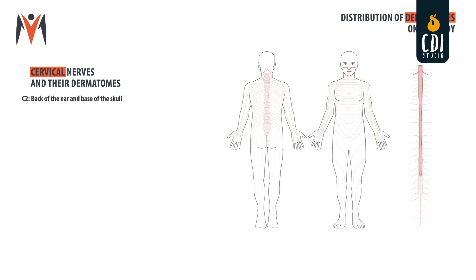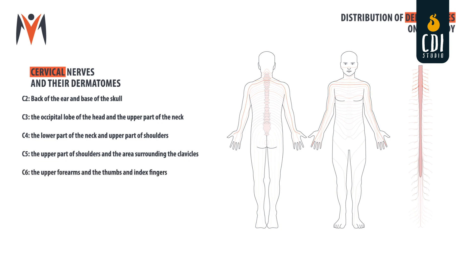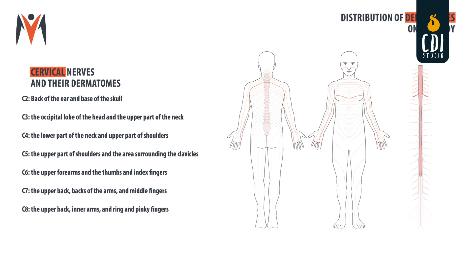C2: back of the ear and base of the skull. C3: the occipital lobe of the head and the upper part of the neck. C4: the lower part of the neck and upper part of shoulders. C5: the upper part of shoulders and the area surrounding the clavicles. C6: the upper forearms and the thumbs and index fingers. C7: the upper back, backs of the arms and middle fingers. C8: the upper back, inner arms and ring and pinky fingers.